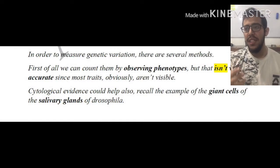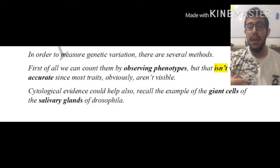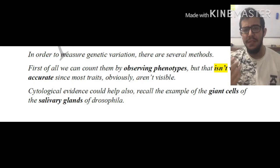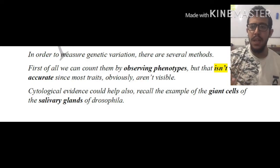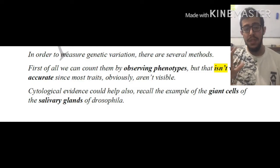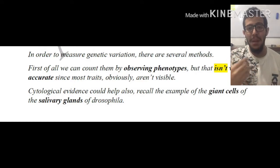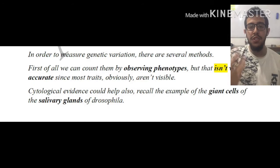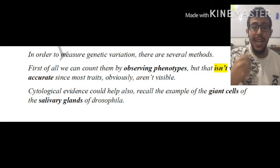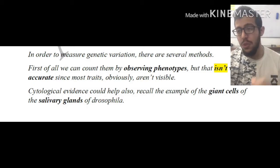In order to measure genetic variation, there are several methods, some more accurate than others. First, we can count variation by observing phenotypes, but that isn't very accurate since most traits cannot be visualized. Some traits, like eye color or melanin pigment, can give us a hint of the genotypes present, however it is not very accurate for the vast majority of traits.